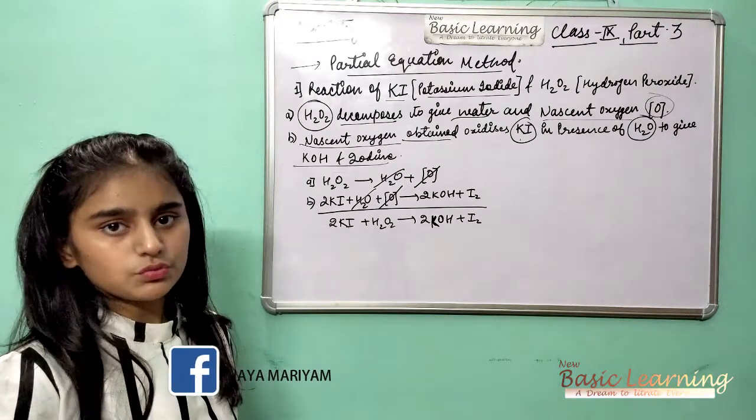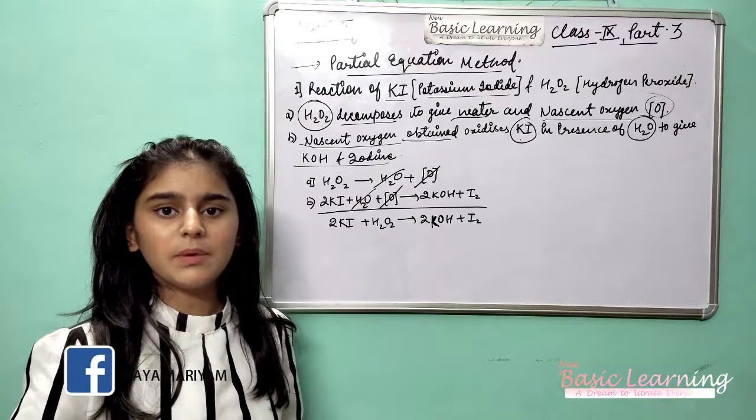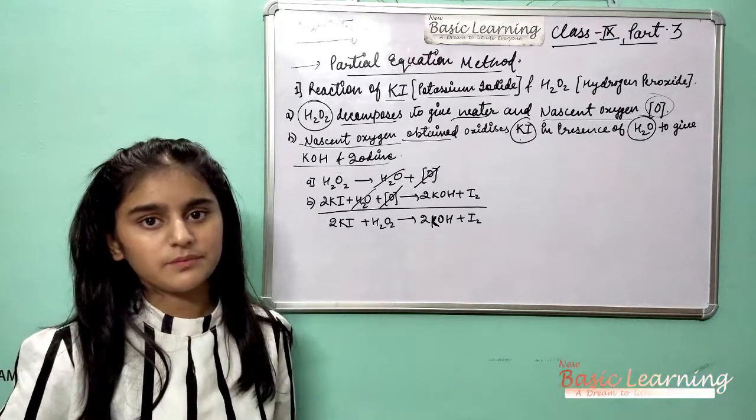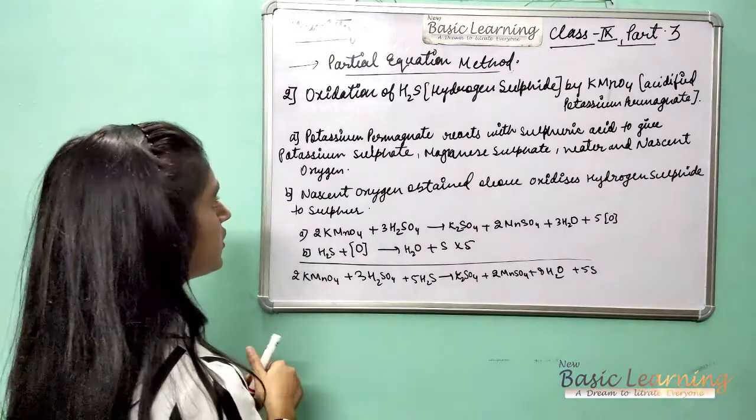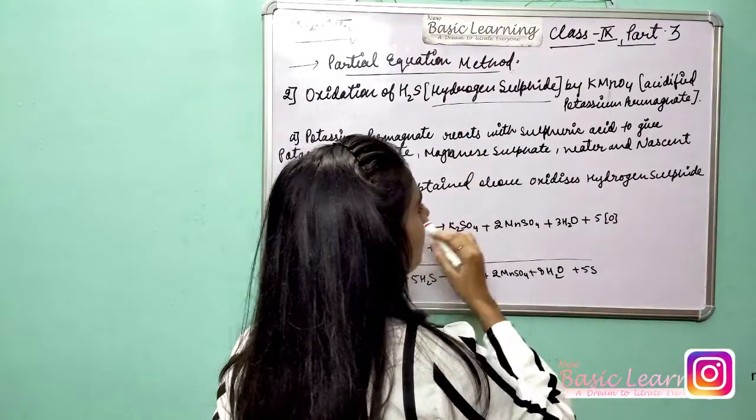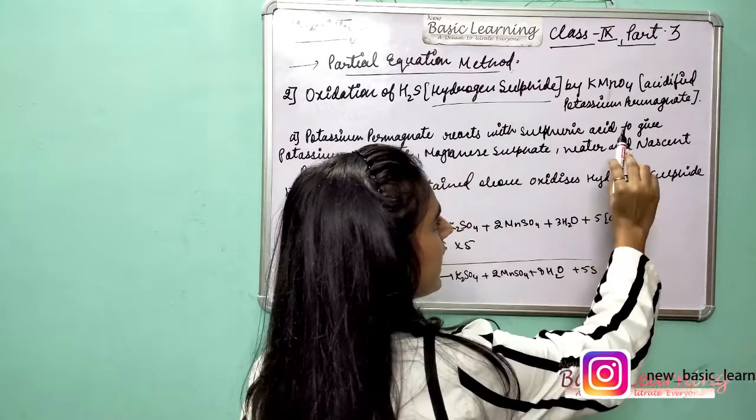Now we will do the second example. The second example is about the oxidation of H2S, which is hydrogen sulfide, by KMnO4, which is acidified potassium permanganate. Acidified means that some acid is in the reaction.